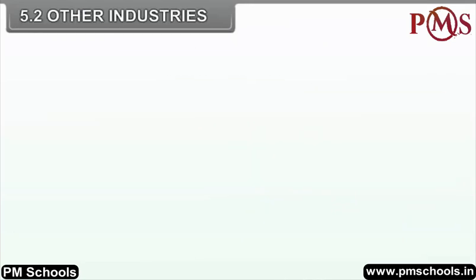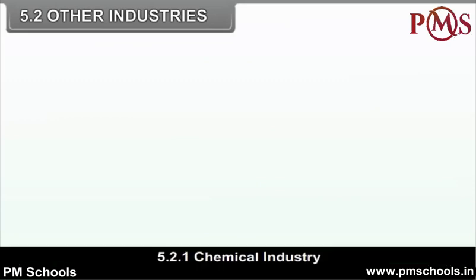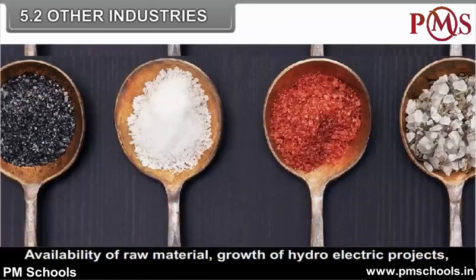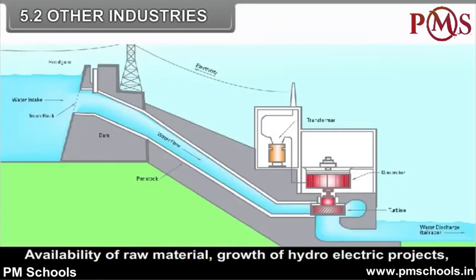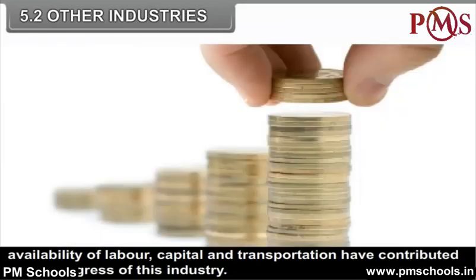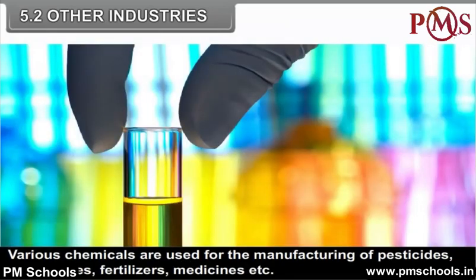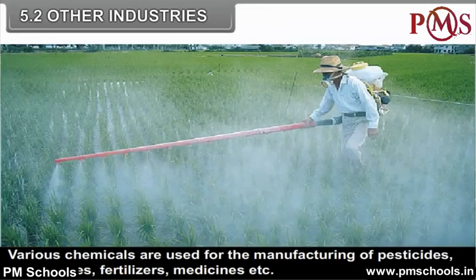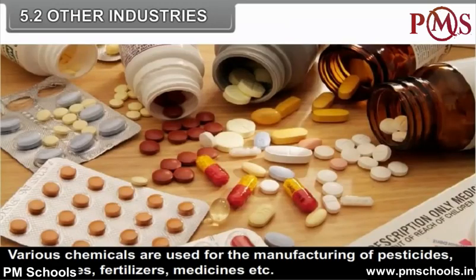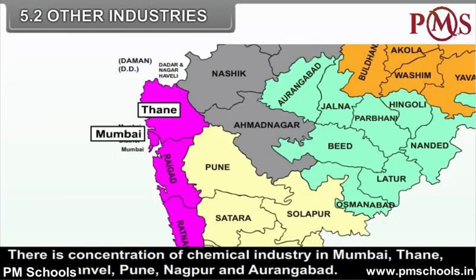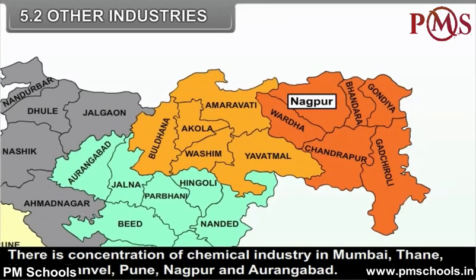The chemical industry is one of the most important industries of Maharashtra. Maharashtra contributes 40% of the total production of chemicals in the country. Availability of raw material, growth of hydroelectric projects, availability of labor, capital and transportation have contributed to the progress of this industry. Various chemicals are used for the manufacturing of pesticides, insecticides, fertilizers, medicines, etc. There is a concentration of chemical industry in Mumbai, Thane, Kalyan, Panvel, Pune, Nagpur and Aurangabad.